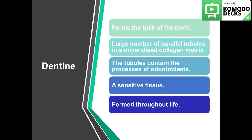Dentine forms the bulk of the tooth. It's composed of a large number of parallel tubules and a mineralized collagen matrix. The tubules contain the processes of odontoblasts, mainly among other structures. Dentine is a sensitive tissue because at the bottom layer beside the pulp we have the odontoblasts and some nerve cells that extend into the tubules. Dentine is a tissue that is formed throughout life, both physiologically and pathologically.